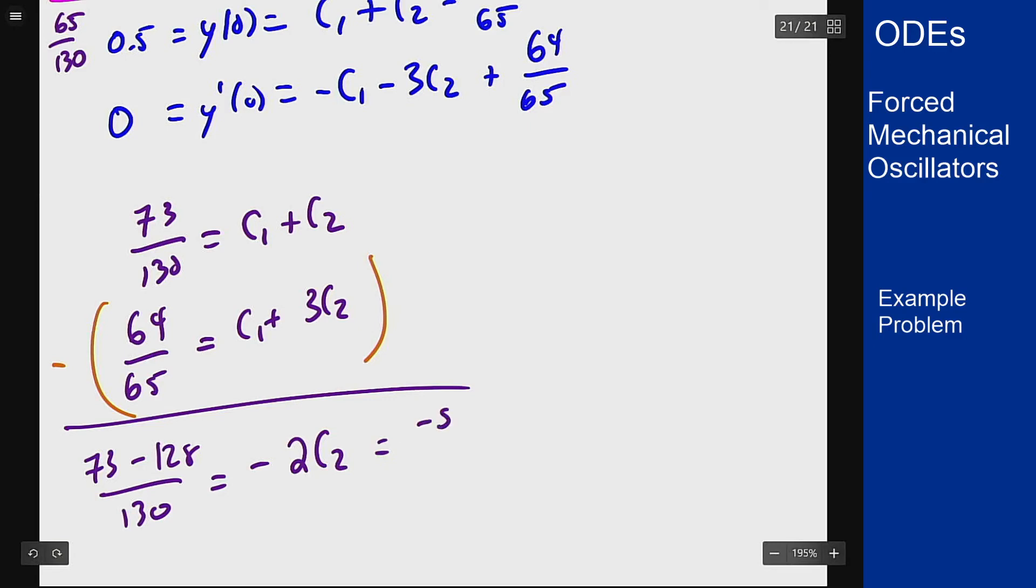So c2 is 55 over 260. Putting that back into the first equation gives me that 146 over 260 equals c1 plus 55 over 260, so c1 is 91 out of 260.